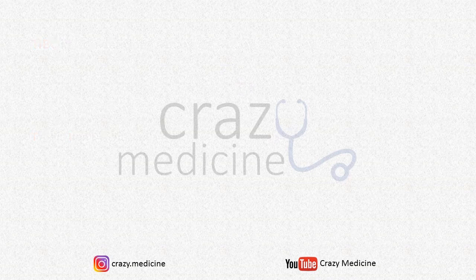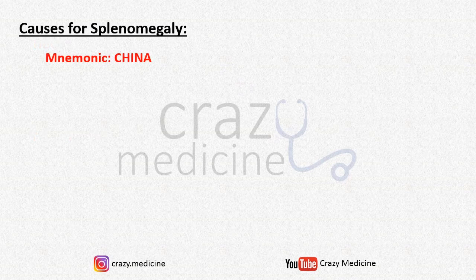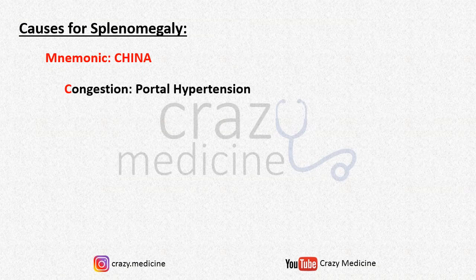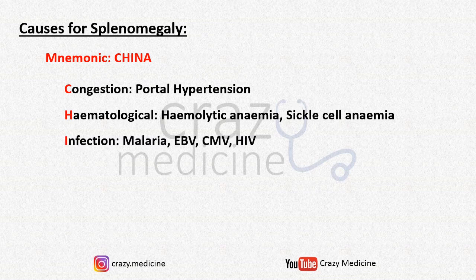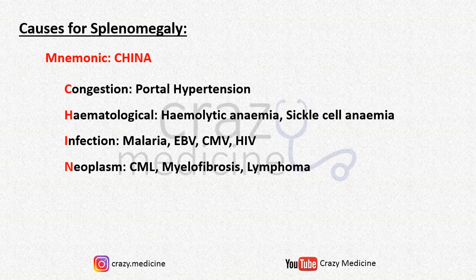Then causes for splenomegaly, and the mnemonic is CHINA. C for congestion, i.e. portal hypertension. H for hematological, which includes hemolytic anemia and sickle cell anemia. I for infection, which includes malaria, Epstein-Barr virus, cytomegalovirus, and even HIV. N stands for neoplasms like chronic myeloid leukemia,